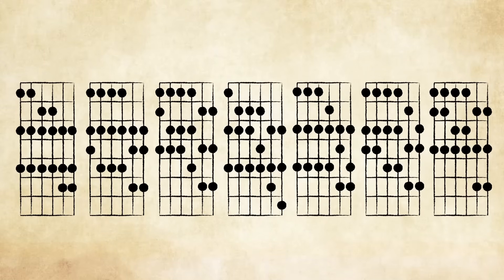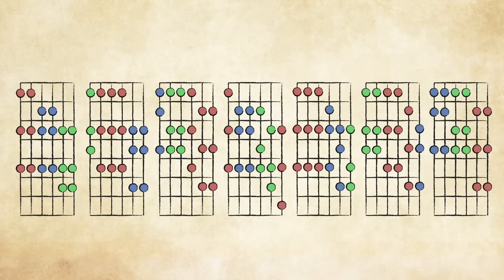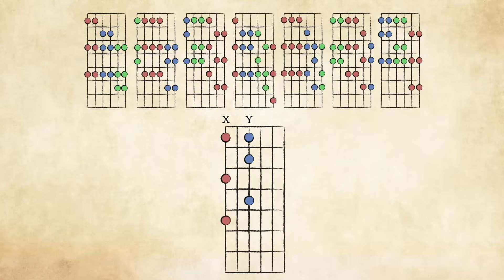Taking a closer look at these seven scale patterns, we see that they are constructed only of three vertical finger shapes. Let's label these shapes X, Y, and Z.